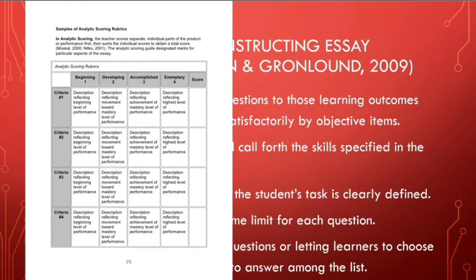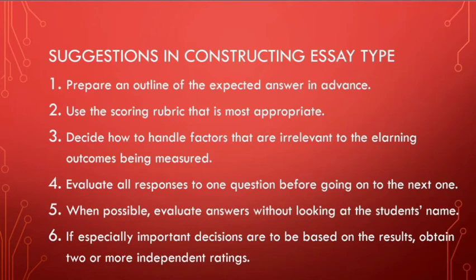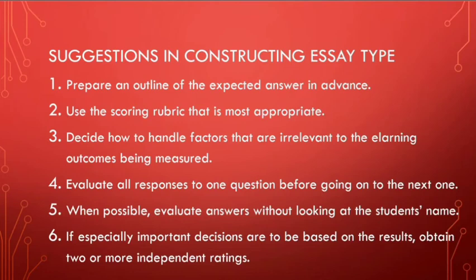Suggestions in scoring the essay type of test: Number one, prepare an outline of the expected answer in advance — sometimes we assign an essay without knowing the possible correct answer ourselves, so at least have a guide. For restricted essays, you need to prepare an outline for the expected answer. Number two, use the most appropriate scoring rubric — align the criteria and the legend. There should be a basis for scoring, not simply assigning 99 out of 100. Decide how to handle factors irrelevant to the learning outcomes — for instance, a grammatically correct response that does not answer the question.